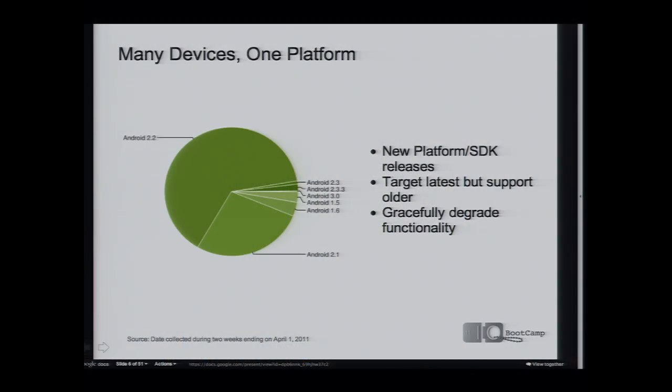The platform isn't a static thing. The Android team releases new platform versions every three to six months — Honeycomb for tablets and Gingerbread for phones recently. We advocate always targeting the latest and greatest to take advantage of new APIs, but we can teach you techniques to gracefully degrade your application. For example, multi-touch was introduced at a certain point, so you can detect at runtime whether the device supports it and fall back to buttons if not.